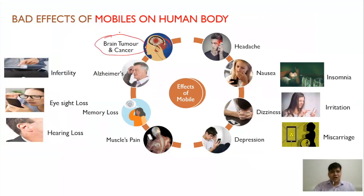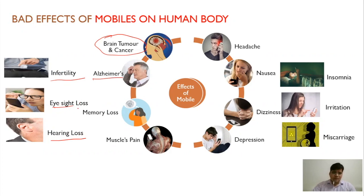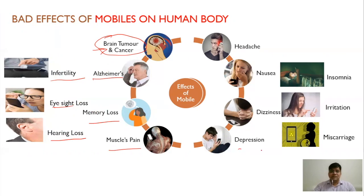These are some illnesses that can occur: brain tumor and cancer, Alzheimer's, infertility, eyesight loss, hearing loss — these are very common losses that will definitely occur with continuous mobile phone use. If you are in the EM field, these major diseases can occur: Alzheimer's, infertility, brain tumor, cancer, memory loss, muscle pain, depression, nausea, headache, insomnia, irritation, and miscarriage.